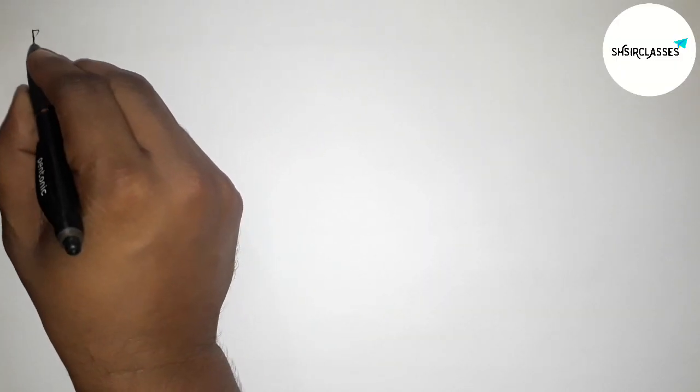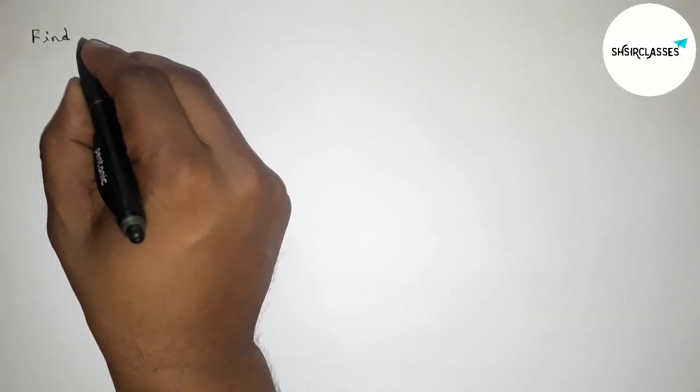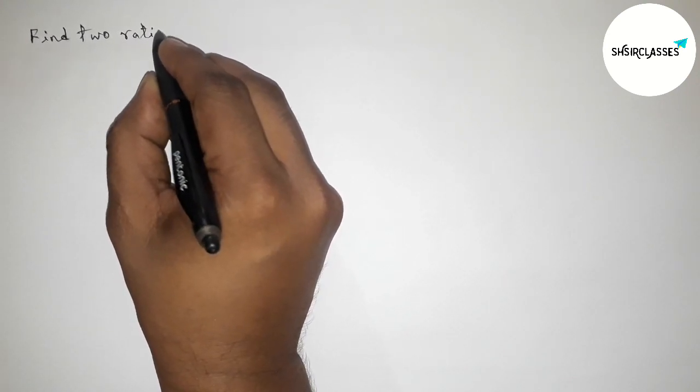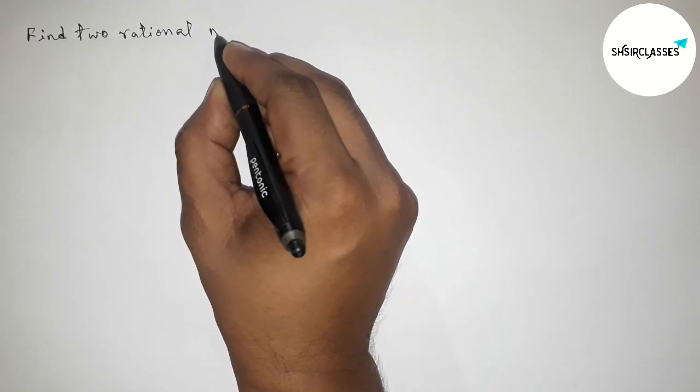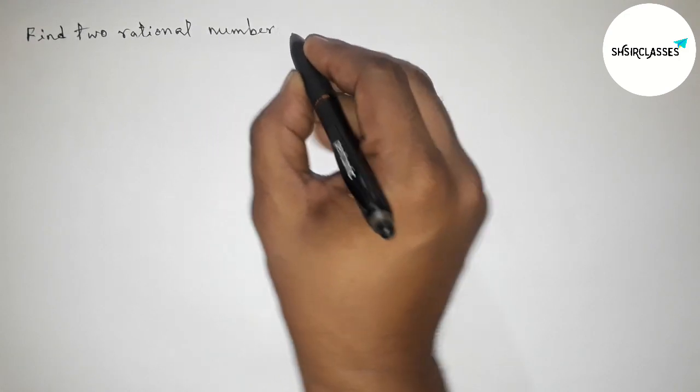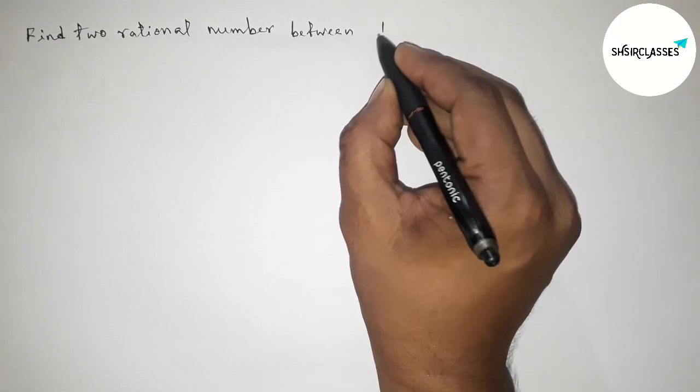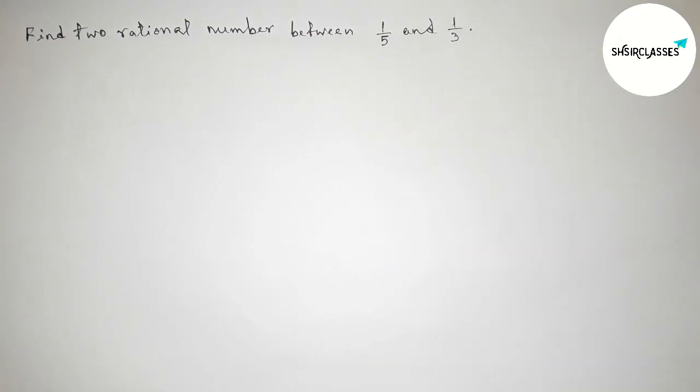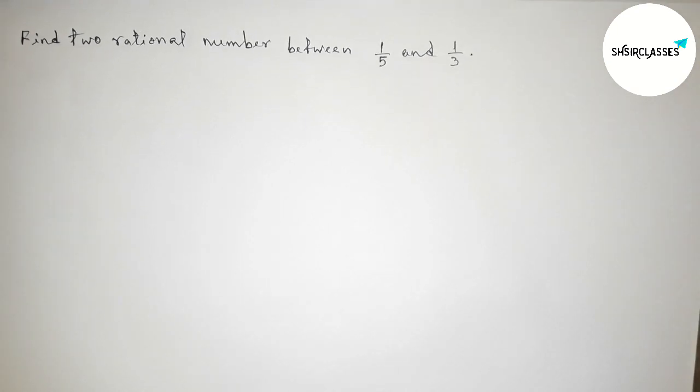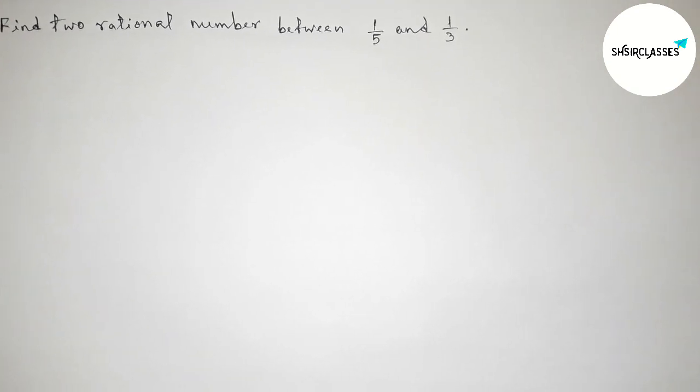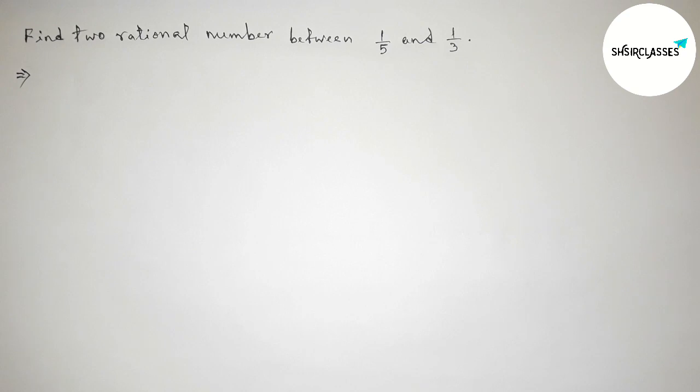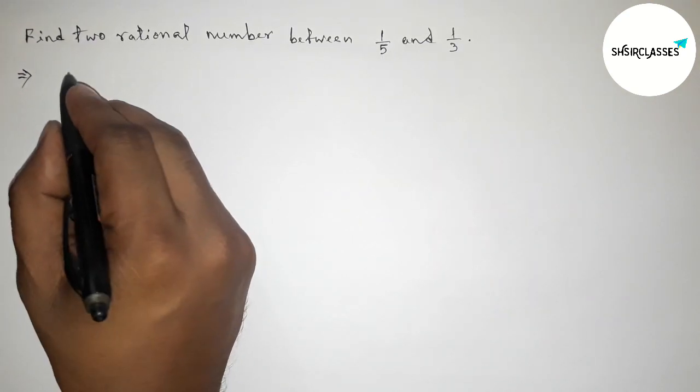Hi everyone, welcome to SI Share Classes. Today in this video we have to find two rational numbers between 1 by 5 and 1 by 3 in an easy way. So please watch the video till the end. Let's start the video. First of all, let us solve this problem here.